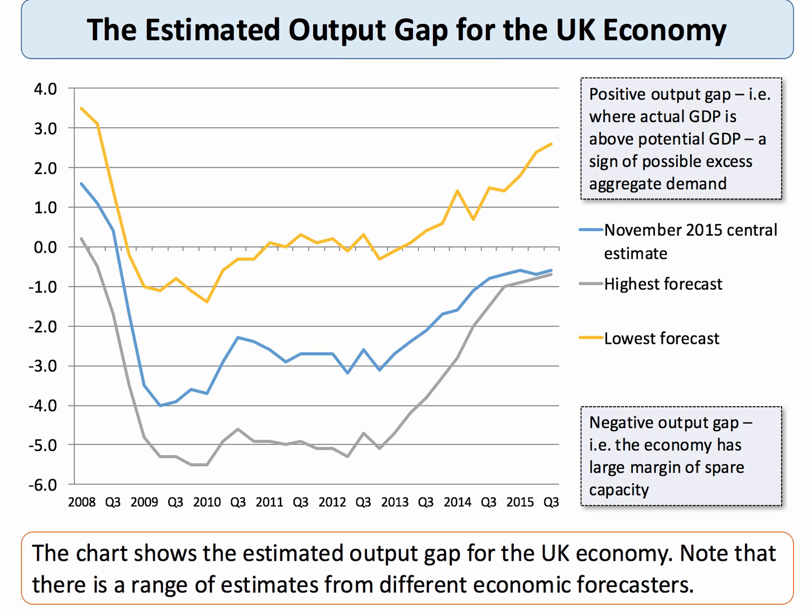Looking at the data for the UK, there are three lines in this chart: the central forecast in blue, a low forecast in yellow, and a high forecast in grey. This means that economic forecasters can't fully agree on how big the output gap is for the British economy. But they tend to agree that in 2008, during the recession, we moved firmly into a negative output gap — GDP was well below its potential level — and in 2009 the output gap was minus 4%. Since then the economy has recovered, and following the blue line the output gap has diminished. By some estimates, heading towards the end of 2015, the output gap was less than 1% of potential national output, meaning there's less margin of spare capacity left for the country to continue to grow.